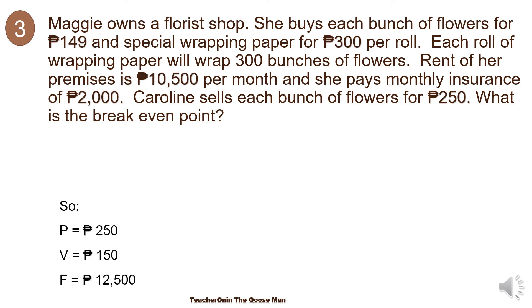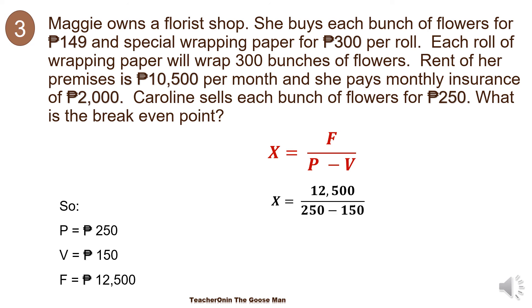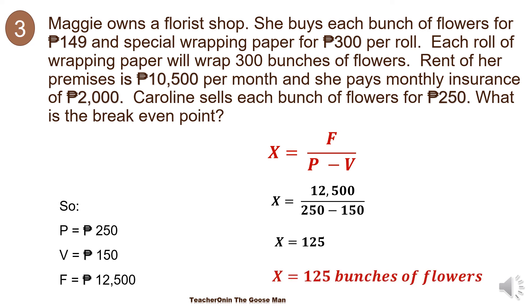The selling price is 250 pesos, the variable cost is 150 pesos, and the fixed cost is 12,500 pesos. We want to find out the break-even point. Using X is equal to F divided by P minus B, we have 12,500 divided by 250 minus 150. Since 250 minus 150 gives us 100, then 12,500 divided by 100 gives us 125. Therefore, 125 bunches of flowers must be sold to break even.